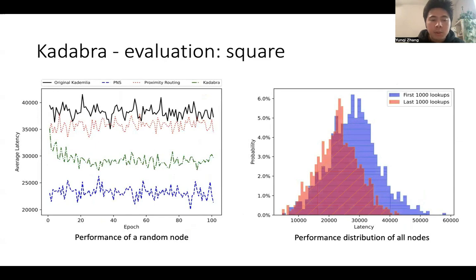In the square scenario, here are some results. For the left figure, we have the performance from a random particular node. And for the right figure, we have the performance distribution of all nodes. As we can see, after a certain number of epochs, Cadabra makes the latency reduced significantly.